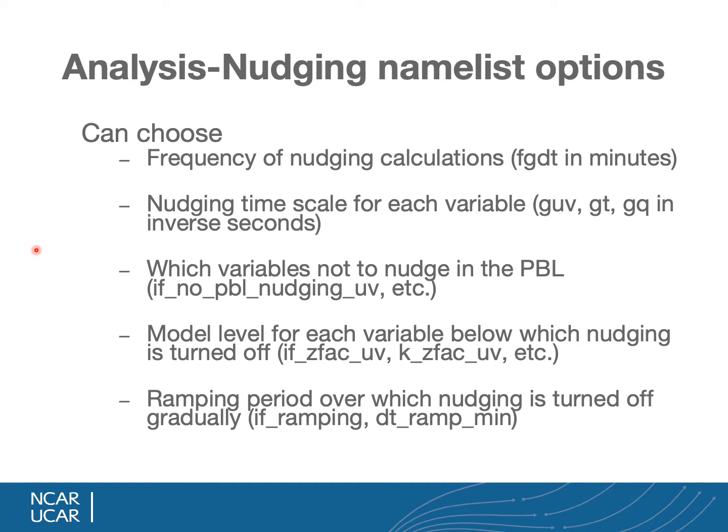Analysis nudging has several namelist options. You can choose the frequency of nudging calculations, typically around 5 minutes — you don't need to compute nudging weights every time step. The nudging time scale G for each variable is specified in inverse seconds. You can choose which variables not to nudge in the boundary layer, or specify the model level below which nudging is turned off instead of nudging only above the PBL. There is also a ramping period over which nudging is turned off at the end of your nudging time, typically 1 to 2 hours, to ramp down nudging strength as the free forecast begins.